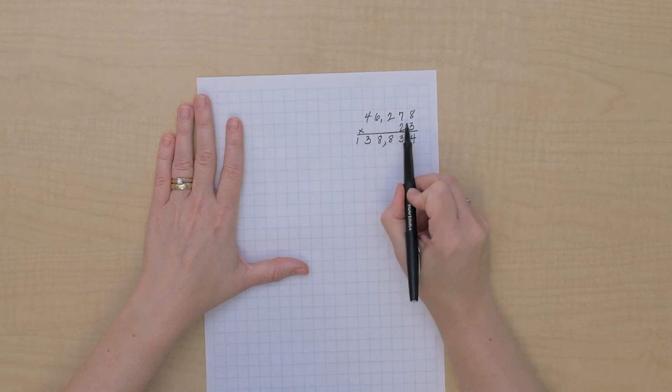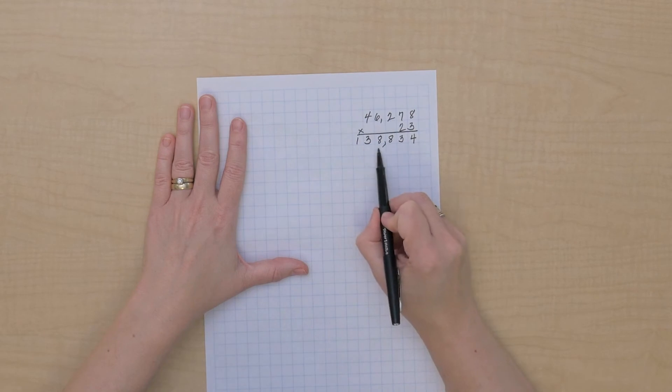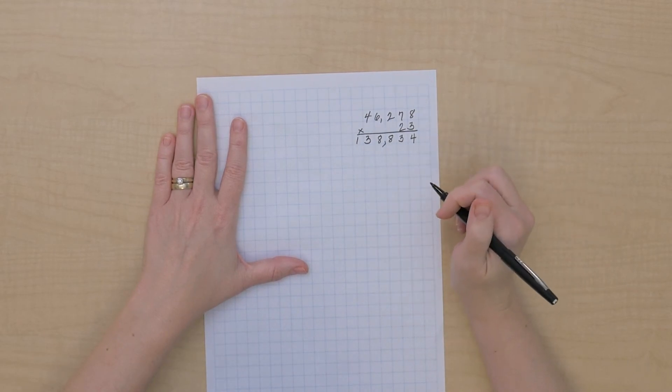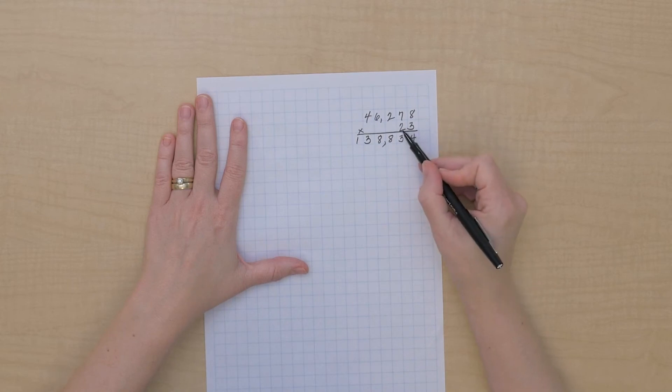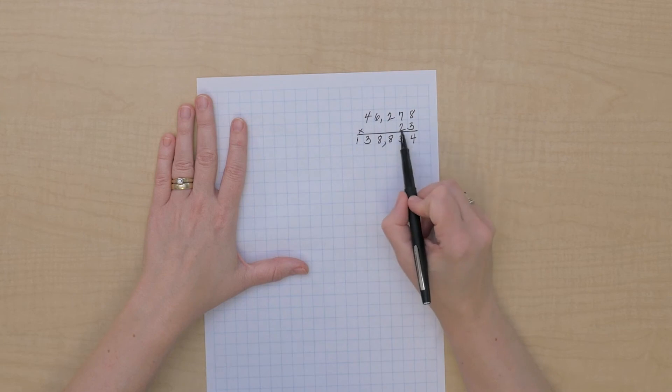46,278 times 3 equals 138,834. We have our units partial product, but now we need to multiply everything here by 20.